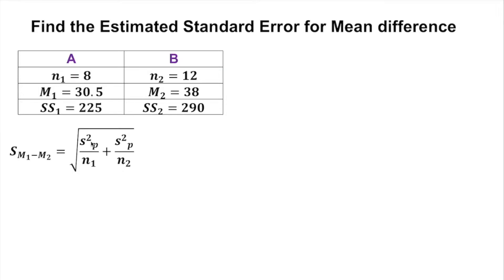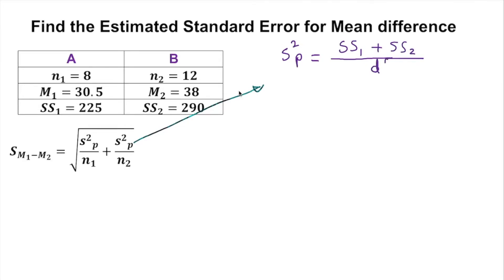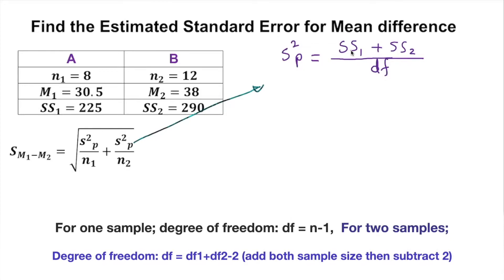Now we need to figure out the full variance. The full variance formula is s squared phi, where s squared stands for variance and phi stands for full. It equals SS1 plus SS2 over the combined degrees of freedom. For one sample we use SS over n minus one, but since we have two samples we add both SS values and divide by the combined degrees of freedom.